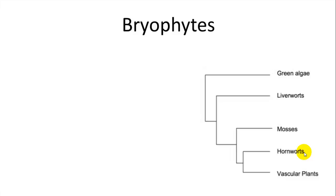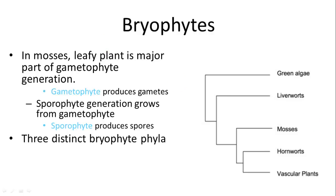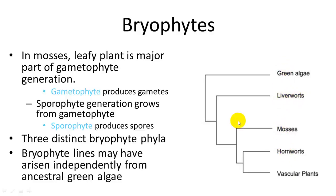In mosses, the leafy plant is the major part of the gametophyte generation — the part that produces gametes. They have an alternation of generations similar to other plants. The sporophyte generation grows from the gametophyte and produces spores, while the gametophyte produces the gametes. There are three distinct bryophyte phyla — liverworts, mosses, and hornworts — and one hypothesis is that they may have evolved independently three different times from green algae.